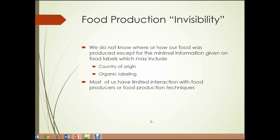Food production away from the areas where food is consumed results in food production invisibility. We don't know where or how our food was produced, except for the minimal information given on food labels, which may include the country of origin and organic labeling. If a particular food product is not labeled as organic, then we have no idea what system was used to produce it, and most of us have limited interaction with food producers or food production techniques.